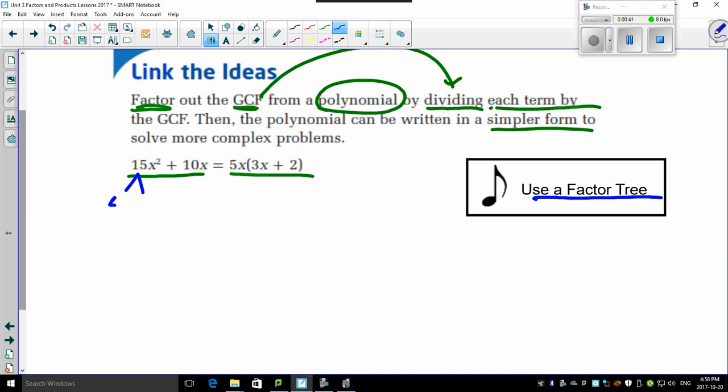15, you know, is 5 and 3. 10, you know, is 5 and 2. Look, there's the common factor right there. That's a 5. Okay, so in the numbers, the GCF is 5.